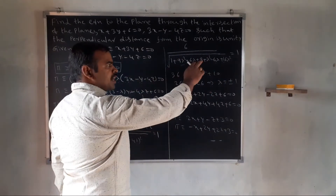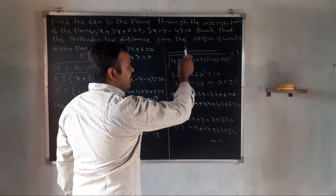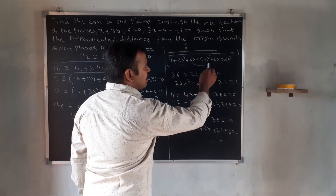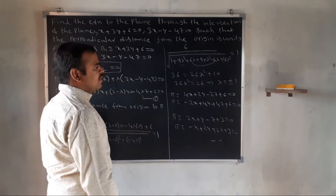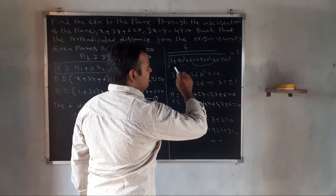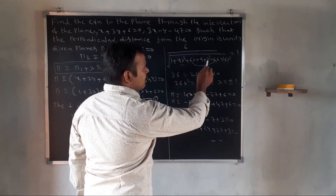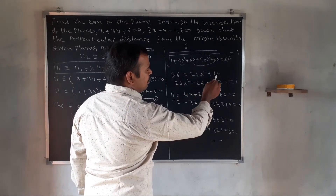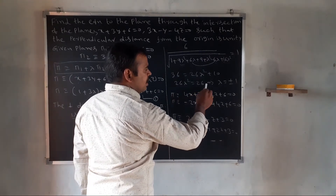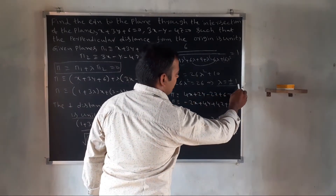Cross-multiplying and squaring both sides: 6 squared equals 36. The 6 lambda terms cancel. We get 1 plus 9 plus lambda square plus 16 lambda square equals 26 lambda square plus 10. So 26 lambda square equals 26, giving lambda square equal to 1, therefore lambda equals plus or minus 1.